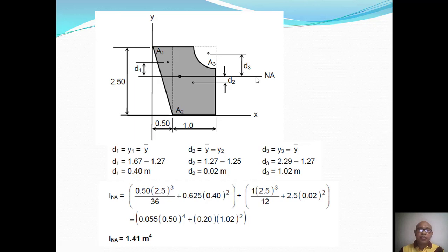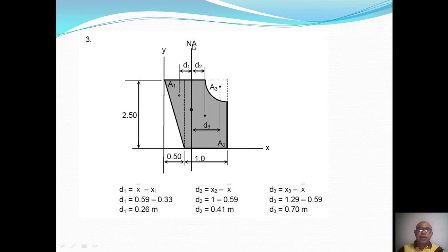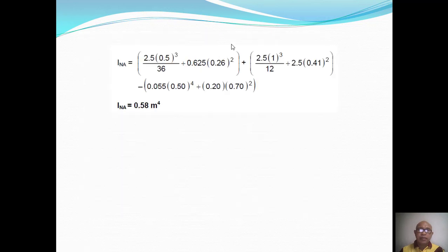For the moment of inertia with respect to the vertical neutral axis, compute distances: d₁ = x̄ - x₁, d₂ = x₂ - x̄, d₃ = x₃ - x̄. Apply the transfer formula for each area — triangle, rectangle, and subtracted quarter circle — to obtain the moment of inertia with respect to the vertical neutral axis.